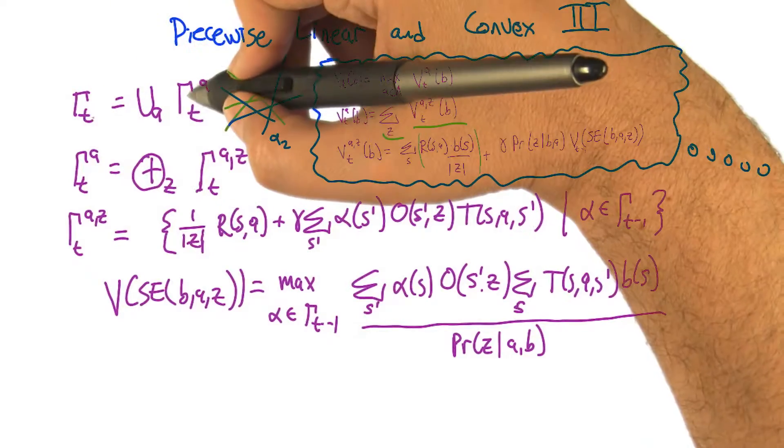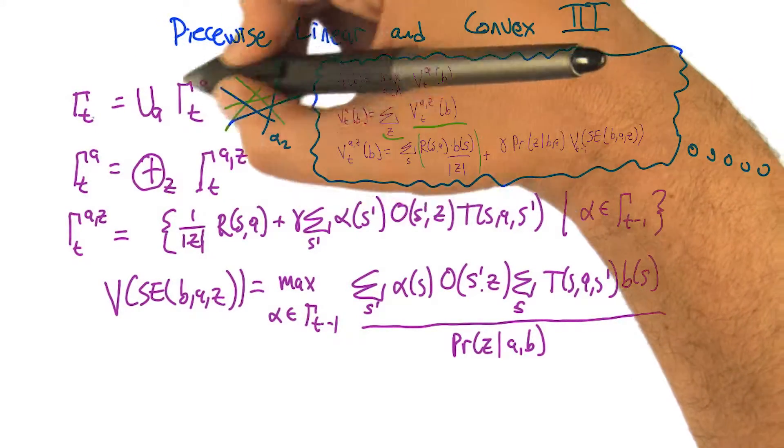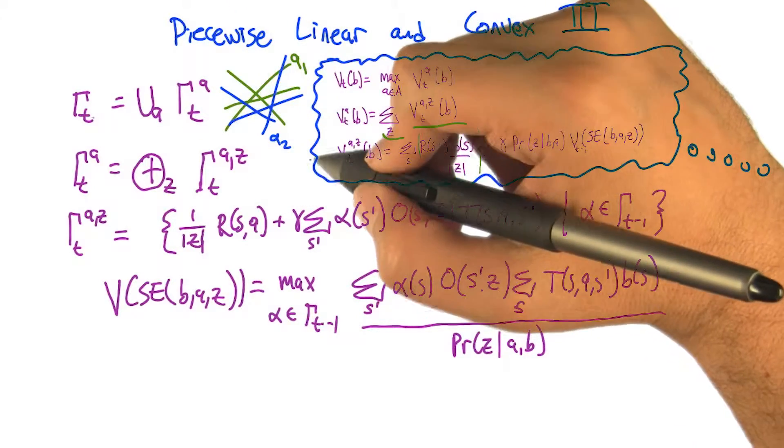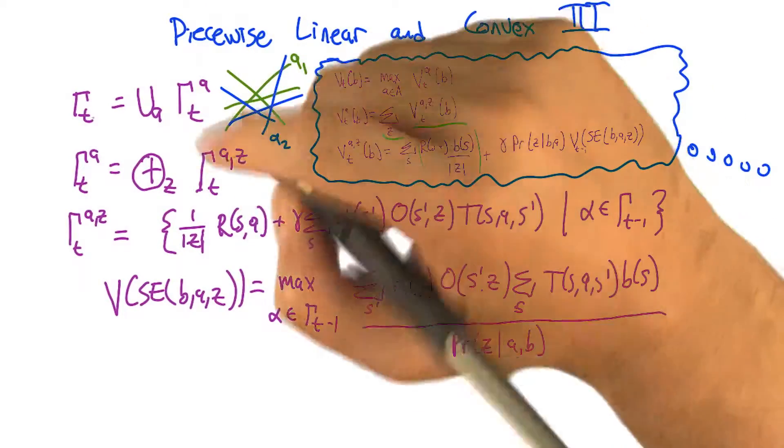So in this case, the number of vectors, this first step, the number of vectors is the sum of the size of the number of vectors in all the sets, Gamma_AT. Here, we're actually multiplying. So it's the product of the sizes of all these sets, which is finite, but it could get actually quite big.